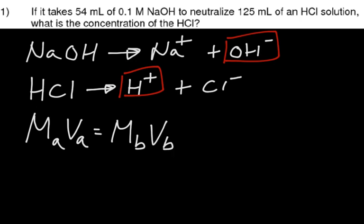And in this particular problem, what are we looking for? We are looking for the concentration of the HCl. So we know from experience, concentration will be capital M, and since it's HCl, and HCl is an acid, we are looking for Ma. So what we have to do next, we simply have to isolate Ma.